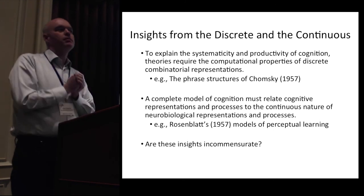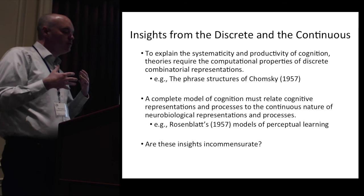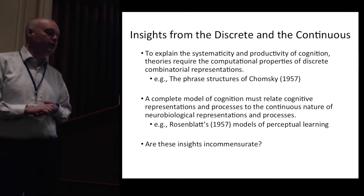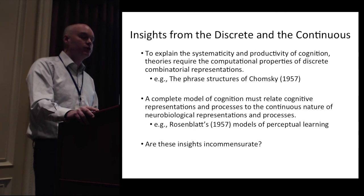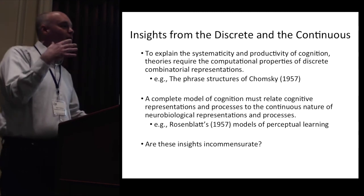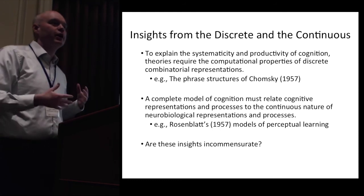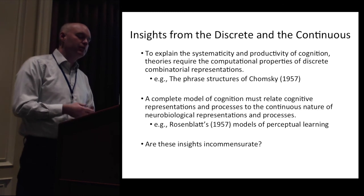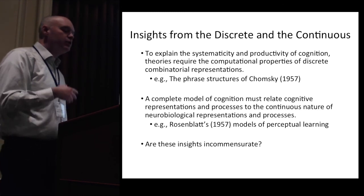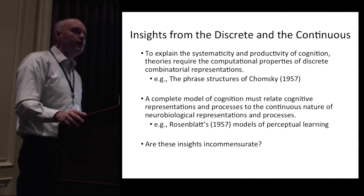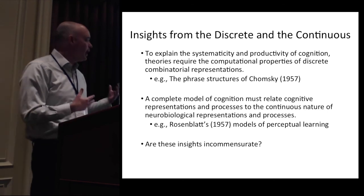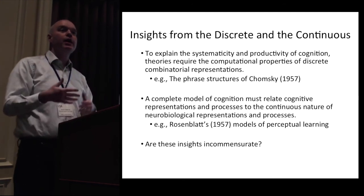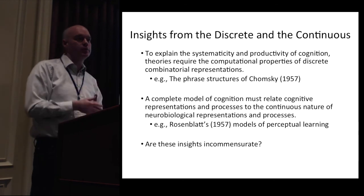It's our belief, shared by many in this room, that there are insights from both of these traditions. One key insight from the discrete tradition: to explain the systematicity and productivity of cognition, theories require the computational properties of discrete combinatorial representations. This is a long tradition reaching back to the phrase structure rules of Chomsky 1957. At the same time, a complete model of cognition must relate cognitive representations and processes to the continuous nature of neurobiological representations — stretching back to Rosenblatt's original work on perceptual learning.